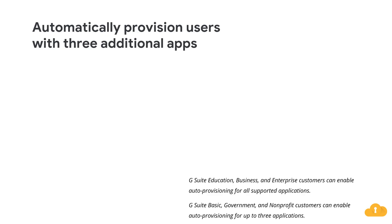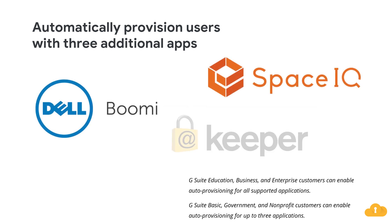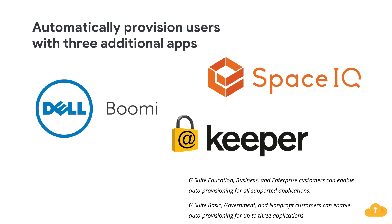We're adding auto provisioning support for three new apps this month: Boomi, Keeper, and SpaceIQ. When auto provisioning is enabled for a supported third-party app, any users created, modified, or deleted in G Suite are then automatically added, edited, or deleted in the third-party app as well. For more information on how to set up auto provisioning, check out the Help Center.